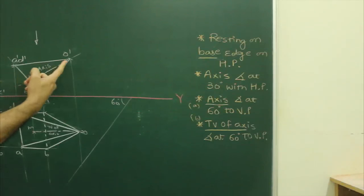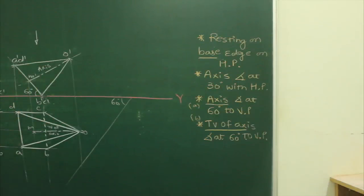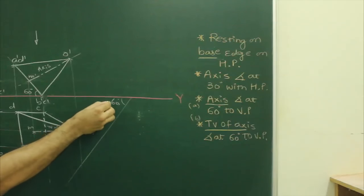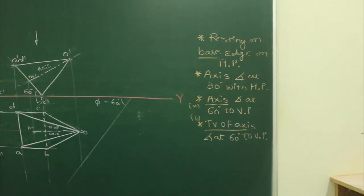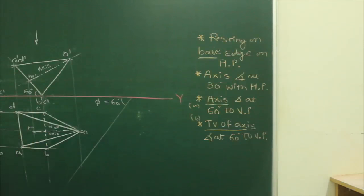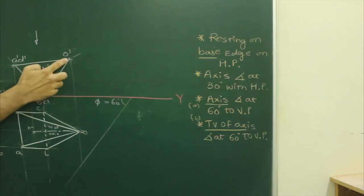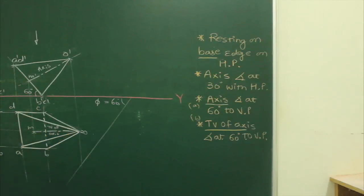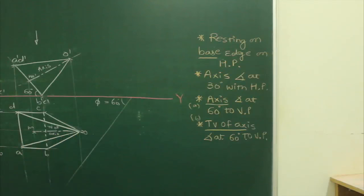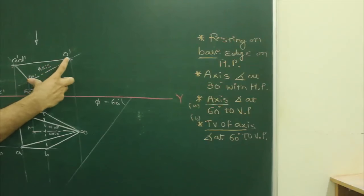Axis is the true length, inclined at 60 degrees to vertical — so that angle would be phi. We have to cut the true length on this line. In the second stage, which one is true length? The axis (O dash–M dash) is true length. O–M is the top view of the axis — that is apparent length, not true length. So we need to cut O dash–M dash.